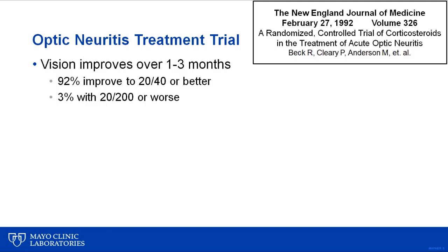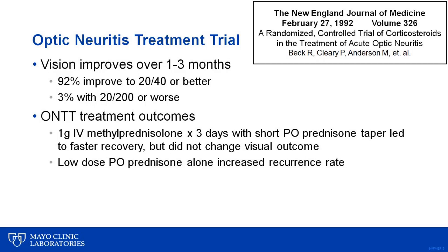92% of patients improved to 20/40 or better. However, not all cases improved, with 3% remaining 20/200 or worse. Interestingly, treatment with IV steroids led to a quicker recovery but did not change the ultimate visual outcome. Low-dose oral prednisone actually led to an increased risk of relapse and is therefore not recommended for the treatment of acute optic neuritis.